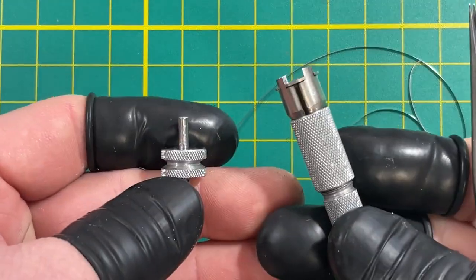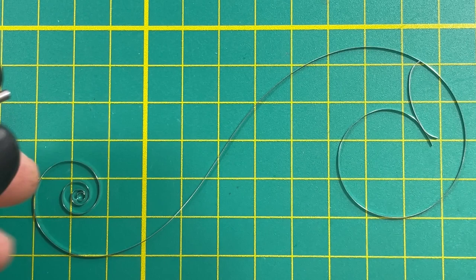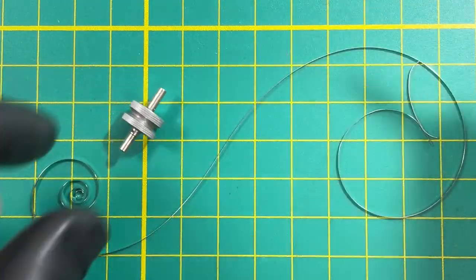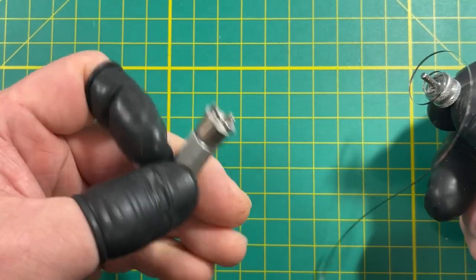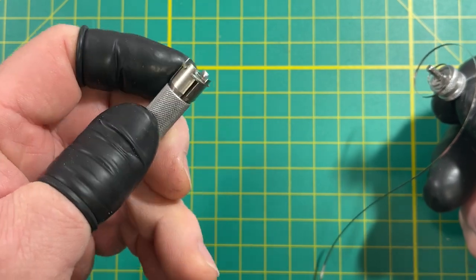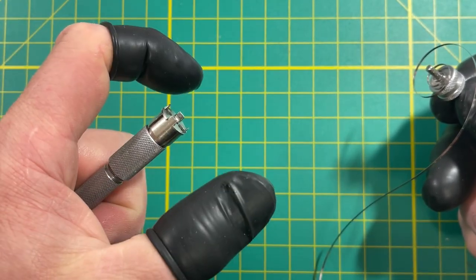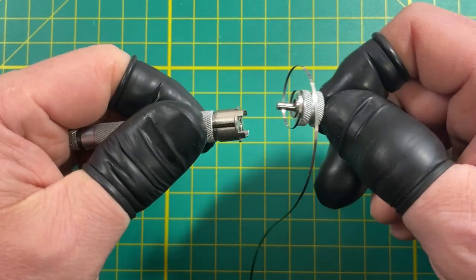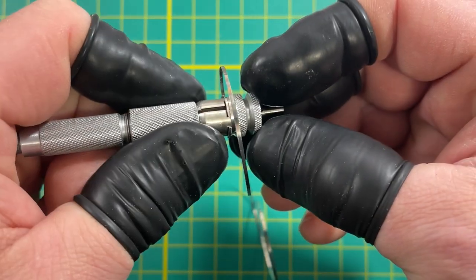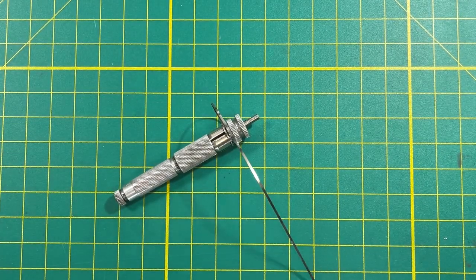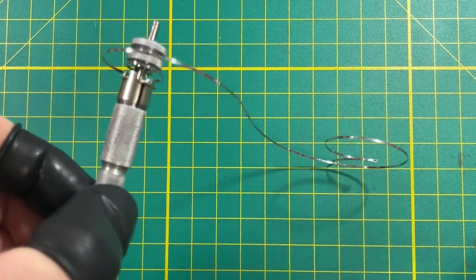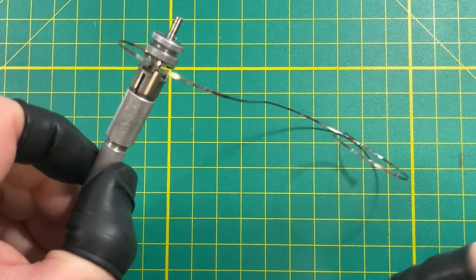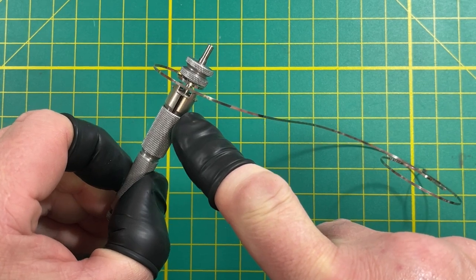We have here our handy dandy old school K&D mainspring winder. This is the size I pretty much always use. These K&D's can be adjusted for different size barrels - you screw this down and those bits come out, you screw it in and it goes like this. You just want to make sure you're getting it small enough that you can put it inside the barrel. There's our mainspring loaded. I haven't dropped this in yet.